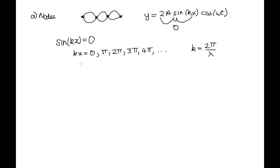OK, so we've got kx is equal to 2π over λ times x. And it's equal to zero π, 2π, 3π, just integer multiples of π. And what we're trying to do is work out x in terms of λ. So we can multiply both sides by λ over 2π.